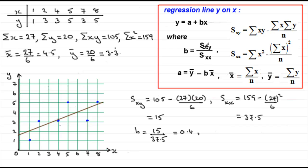So we've got our b value for our equation, our regression line of y on x. We now need to get a, but a is going to be y bar minus bx bar. Well, y bar is 3.3 recurring, so put that in there, 3.3 recurring.